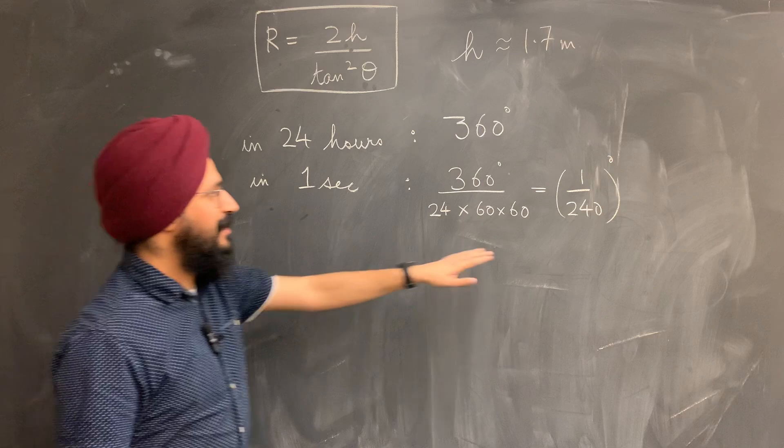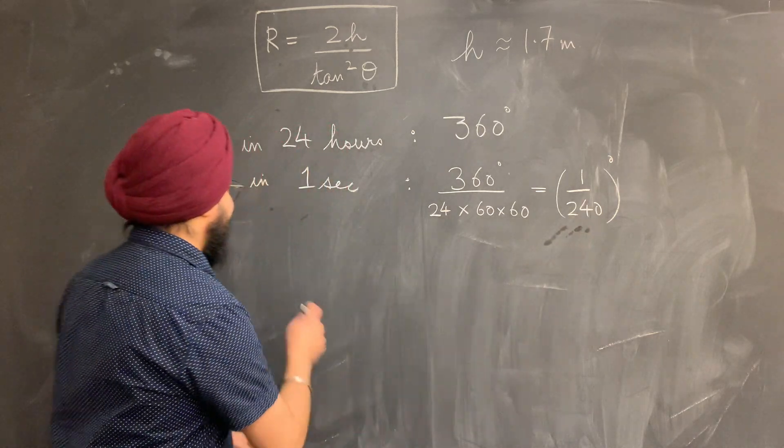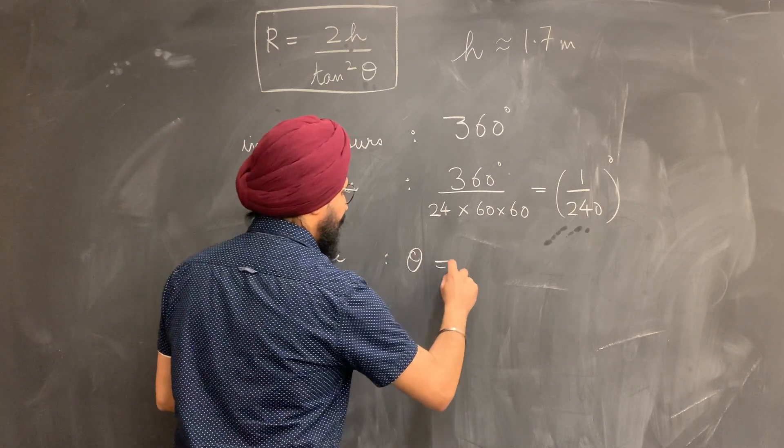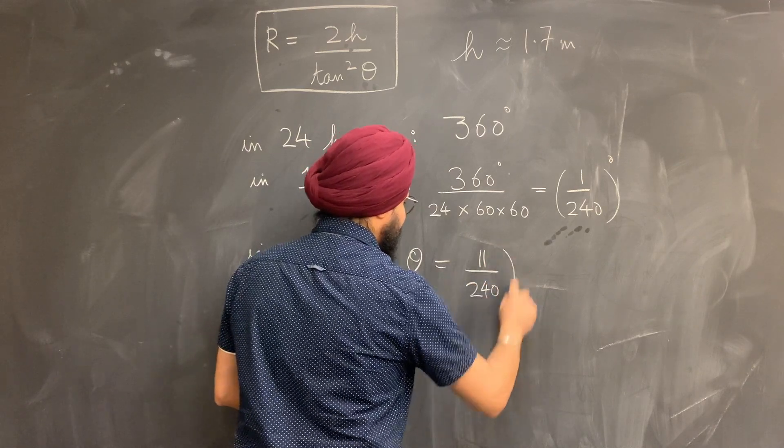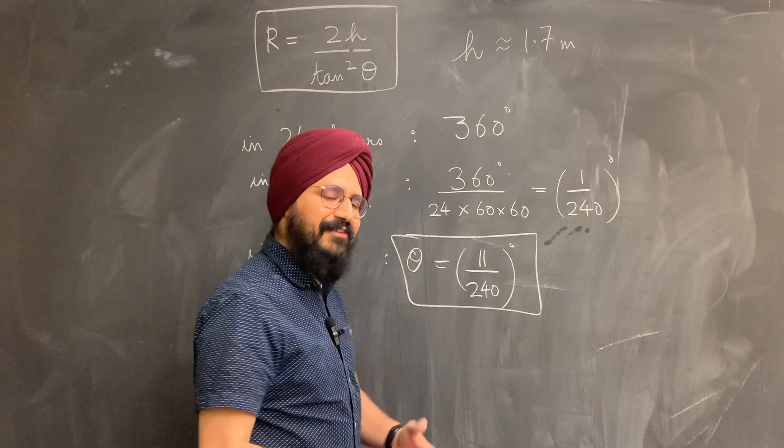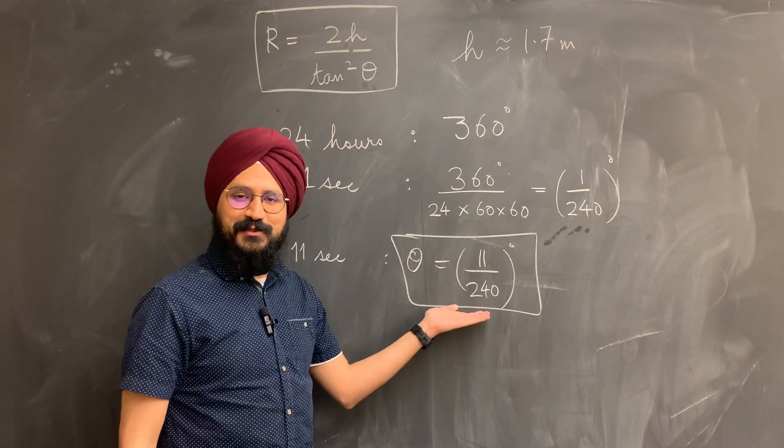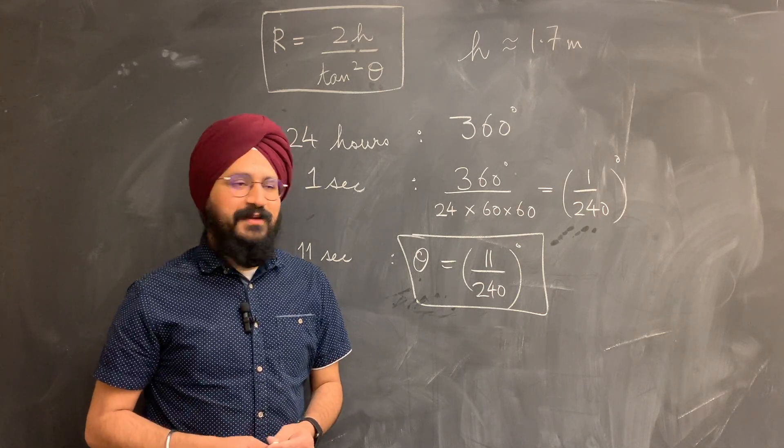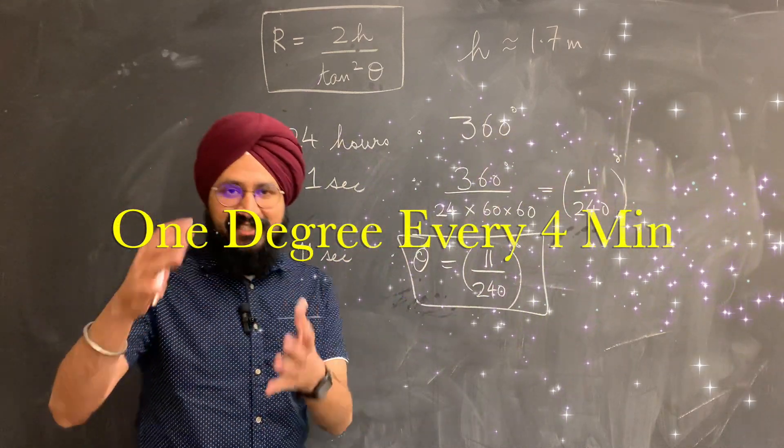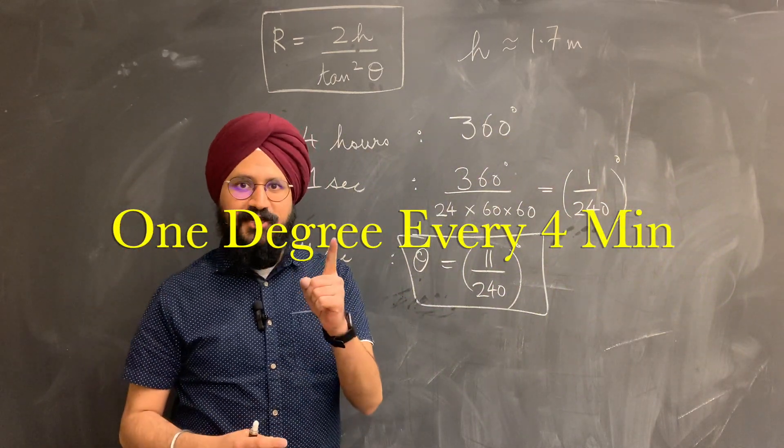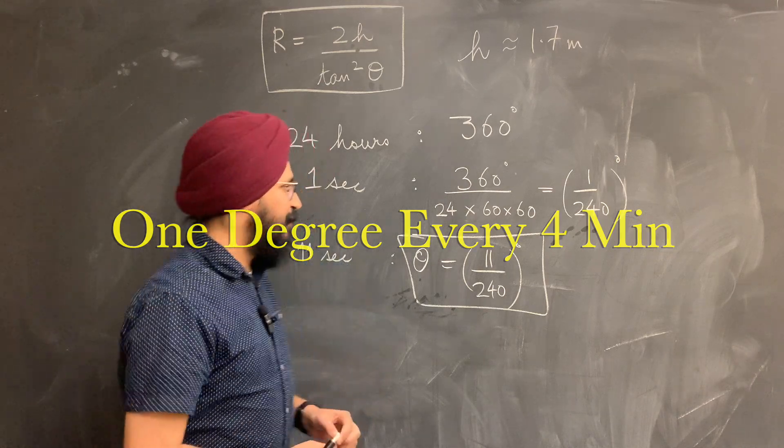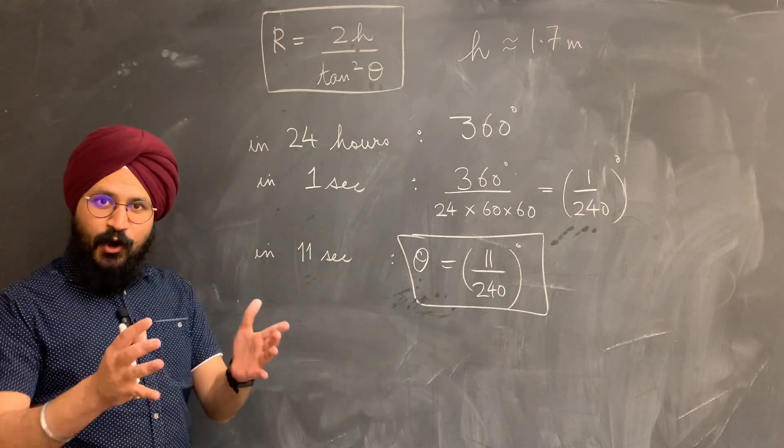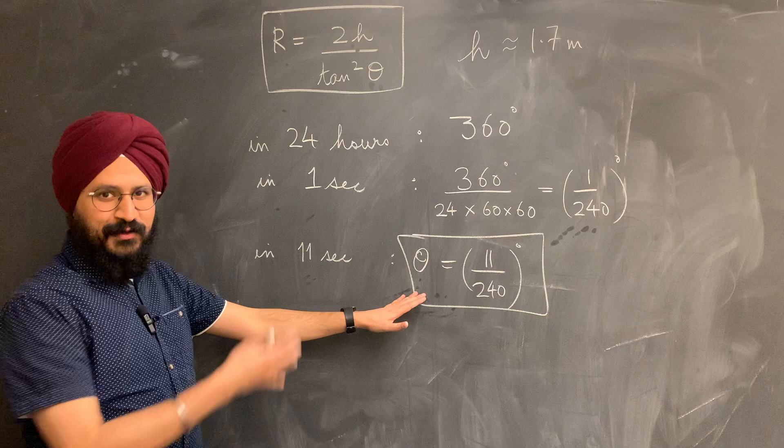So if the sun swept these many degrees every second, in 11 seconds, the sun is going to be sweeping about 11 by 240 degrees. And there you go. We have an estimate for the angle between our two sunsets. Back in my high school days, when I did a lot of amateur astronomy, I would remember this result as saying that the sun basically sweeps about 1 degree every 4 minutes in the sky. So there's no surprise that in about 11 seconds, the sun sweeps quite a small angle. And now we know quantitatively what that angle really is.